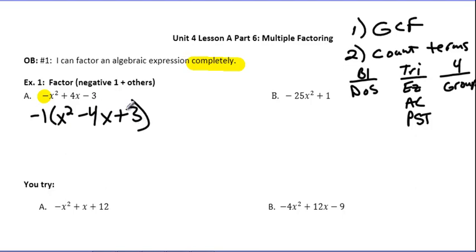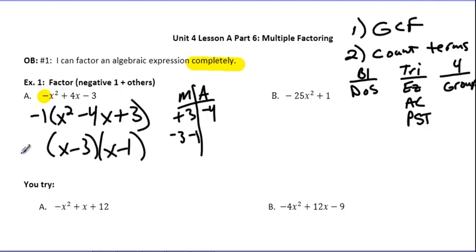Now, we see that we have an easy trinomial. So I'm going to do an MA chart. Some of you are so good at this now you don't even need it. We need to get the positive three multiplication and negative four in addition. That's going to be negative three and negative one. So we have -1(x - 3)(x - 1), with a negative one in front. And that is your answer.